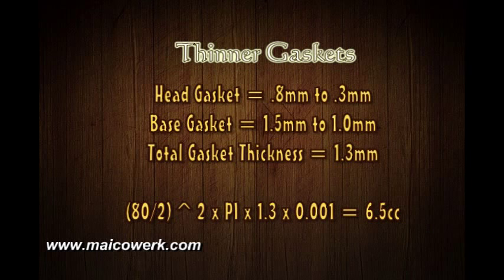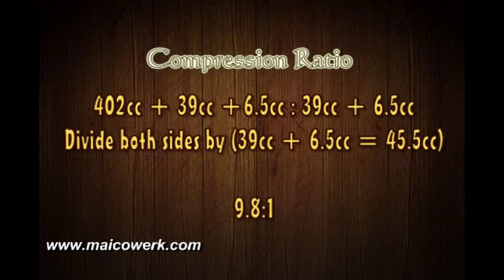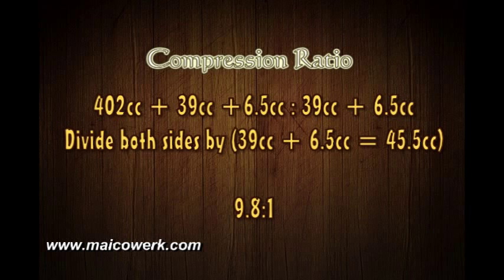Let's use some thinner gaskets — a 0.3mm head gasket and a 1mm base gasket, with a total thickness of 1.3mm, giving 6.5cc instead of 11cc. Plugging this into our formula, we end up with 9.8 to 1. We have increased our compression ratio by 0.8 just by modifying the gaskets.